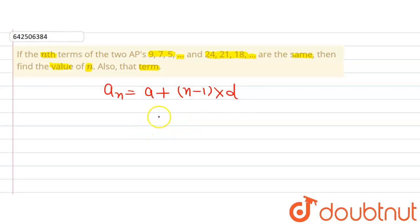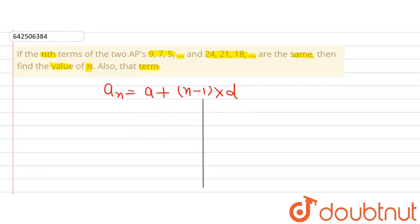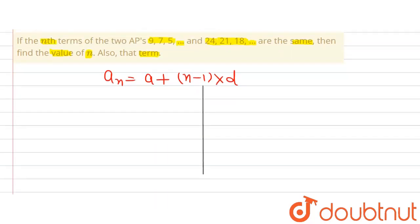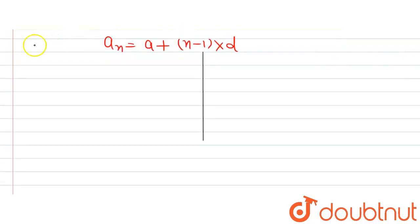Let's consider the first AP. The first AP is 9, 7, 5, and so on.